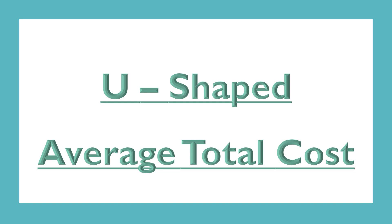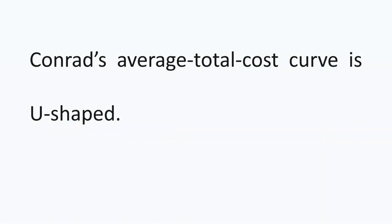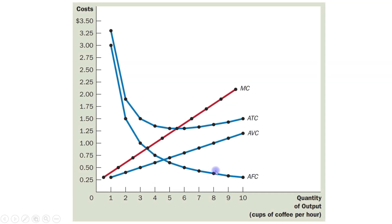Hello students, today's topic is U-shaped average total cost. Conrad's average total cost curve is U-shaped. As you can see in this figure, this average total cost curve is U-shaped — it is first declining, then it is increasing.